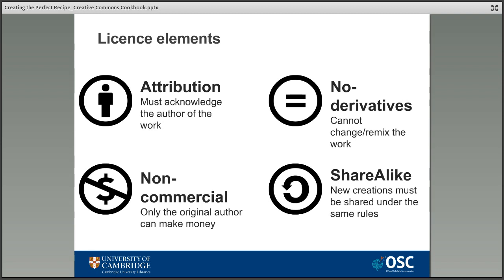If a non-commercial element is included, only the original creator is allowed to make money from their work — anyone who uses it as the basis of something new can't sell it or otherwise use it for commercial purposes, like putting it on a t-shirt. Non-commercial is part of two of the main licenses. The final element is share alike, which specifies that any new creations made from existing materials must be shared under the same license as the original work — so if the original is under a non-commercial license, the new one must be too.